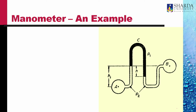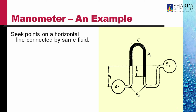Consider two bulbs A and B. The bulbs A and B are filled with a liquid of density ρ₂. These bulbs are connected with an inverted U-tube. The black fluid has a density ρ₁. The difference in the level of the fluids is H as shown. We can calculate the pressure difference P_A minus P_B through a process similar to what we did last time. We seek points on the horizontal level connected by the same fluid. Points 1 and 2 are at the same level connected by the same fluid, so the pressure at 1 must equal the pressure at 2.